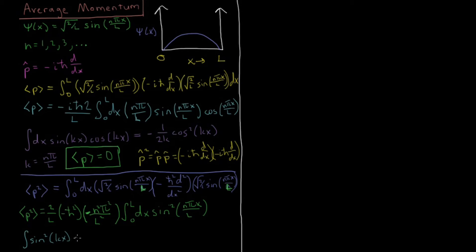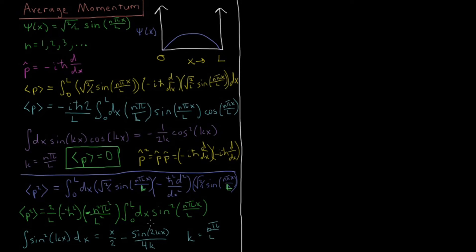Looking up the value of the integral of sine-squared(kx), we get x/2 minus sine(2kx) over 4k. Evaluating this at 0 and L and substituting k equals n pi over L, we find that the sine term gives the same value at both ends and vanishes. So we don't need to worry about that term.